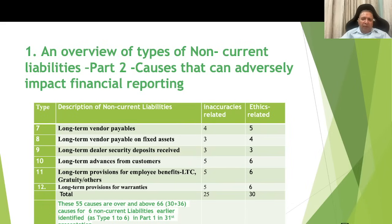Type 7 is long-term vendors payable, with four inaccuracy-related causes and five ethics-related causes. Type 8 is long-term vendor payable on fixed assets. Type 9 is long-term dealer security deposit received, having three inaccuracies and three ethics-related causes. Type 10 is long-term advances from customers. Type 11 is long-term provisions for employee benefits like LTC, gratuity, and others. Type 12 is long-term provisions for warranties. Total: 25 inaccuracies-related and 30 ethics-related causes, summing to 55. These 55 additional causes are over and above the 66 causes identified earlier for six non-current liabilities in Part 1.